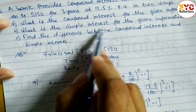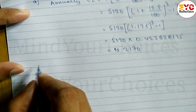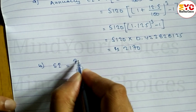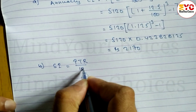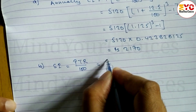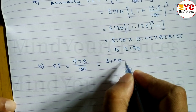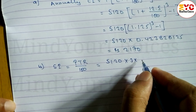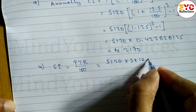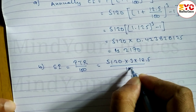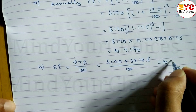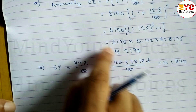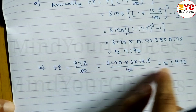Now finding the simple interest. The formula is SI = PTR ÷ 100. P is 5,120, T is 3 years, R is 12.5, divided by 100. When you calculate, we get Rs. 1,920. So annual compound interest is 2,170 and simple interest is 1,920.